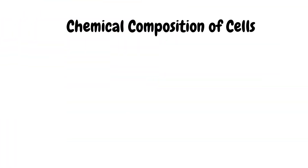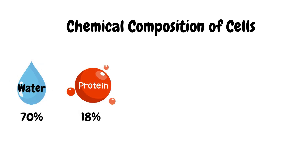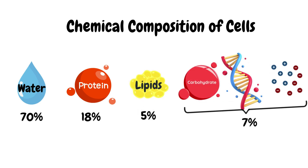Let's look at the chemical composition of cells. The cell is made up of 70% water, 18% protein, 5% lipids, and 7% carbohydrates, DNA, RNA, and ions.